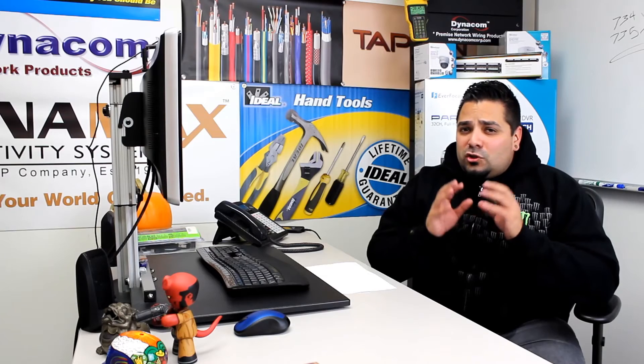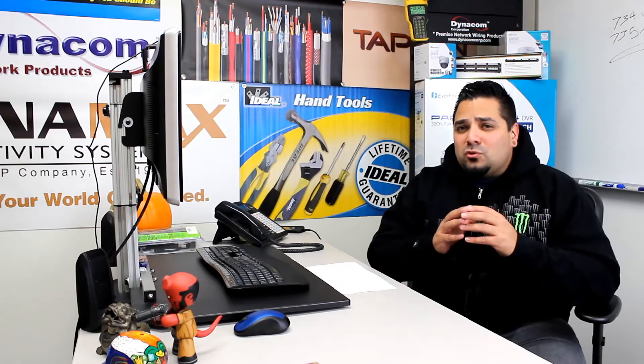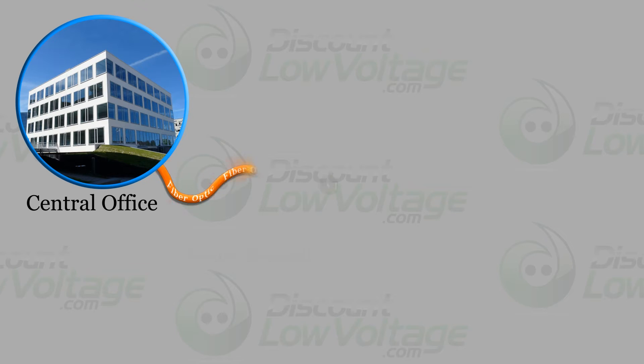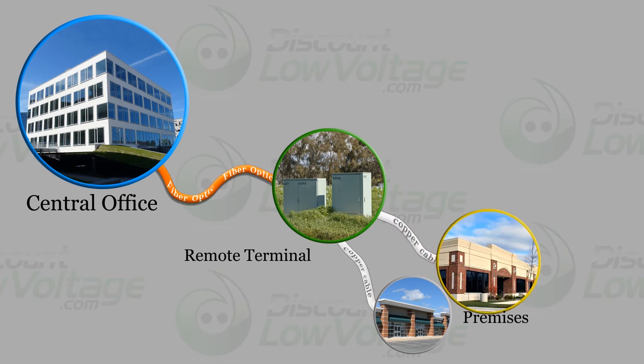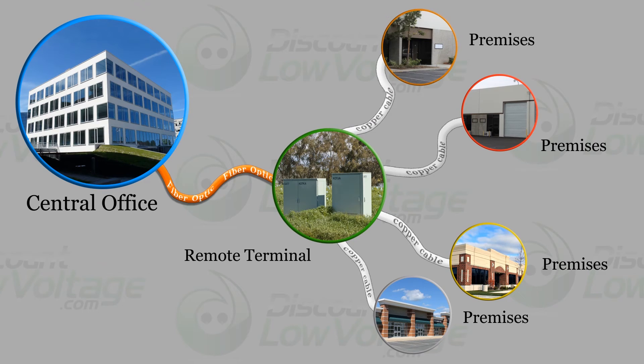The cable from the central office — and keep in mind the central office is miles and miles away from you — uses a fiber optic cable that gets connected to a remote terminal, which is just right around the corner from where you are. From that terminal to your premises, cable manufacturers make specific cables to make the most of the bandwidth of that fiber optic cable. You don't want to choke the investment of that fiber with old Cat 3 cable.